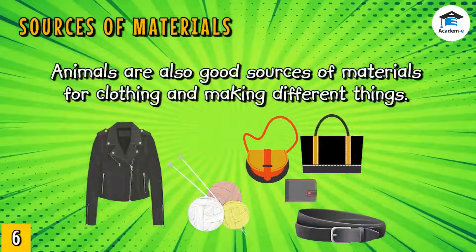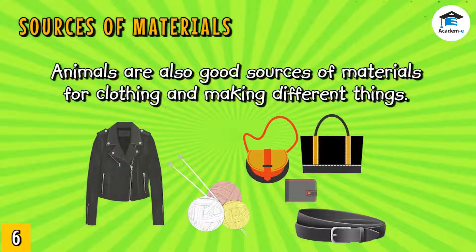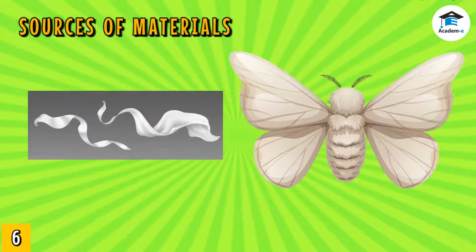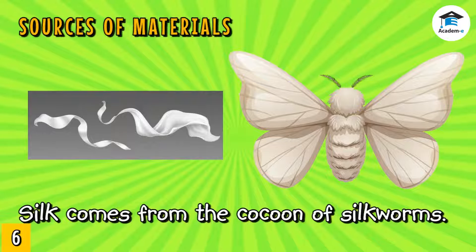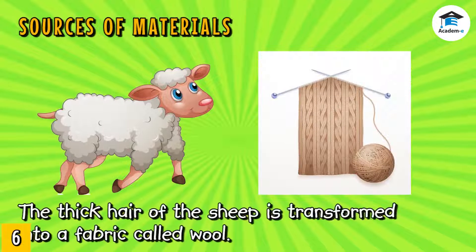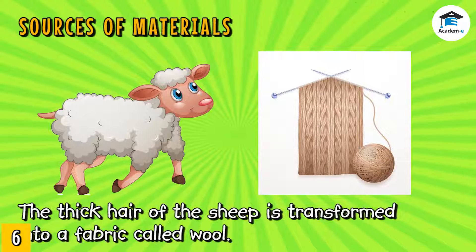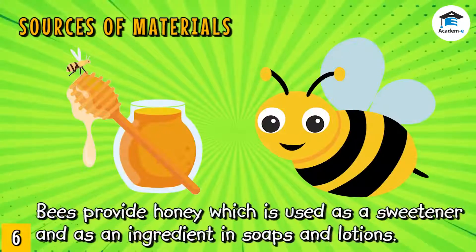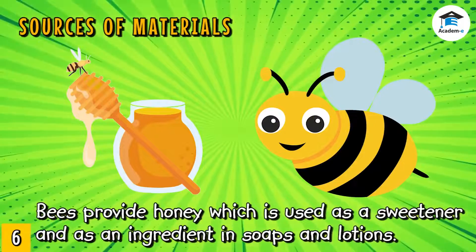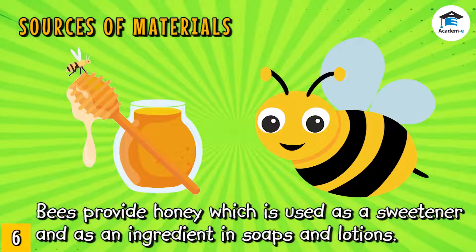Animals are also good sources of materials for clothing and making different things. Silk, which is a material for clothing, comes from the cocoon of silkworms. The thick hair of sheep is shaved off during hot weather and transformed into a fabric called wool. Bees provide people with honey, which is used as a sweetener and as an ingredient in soaps and lotions.